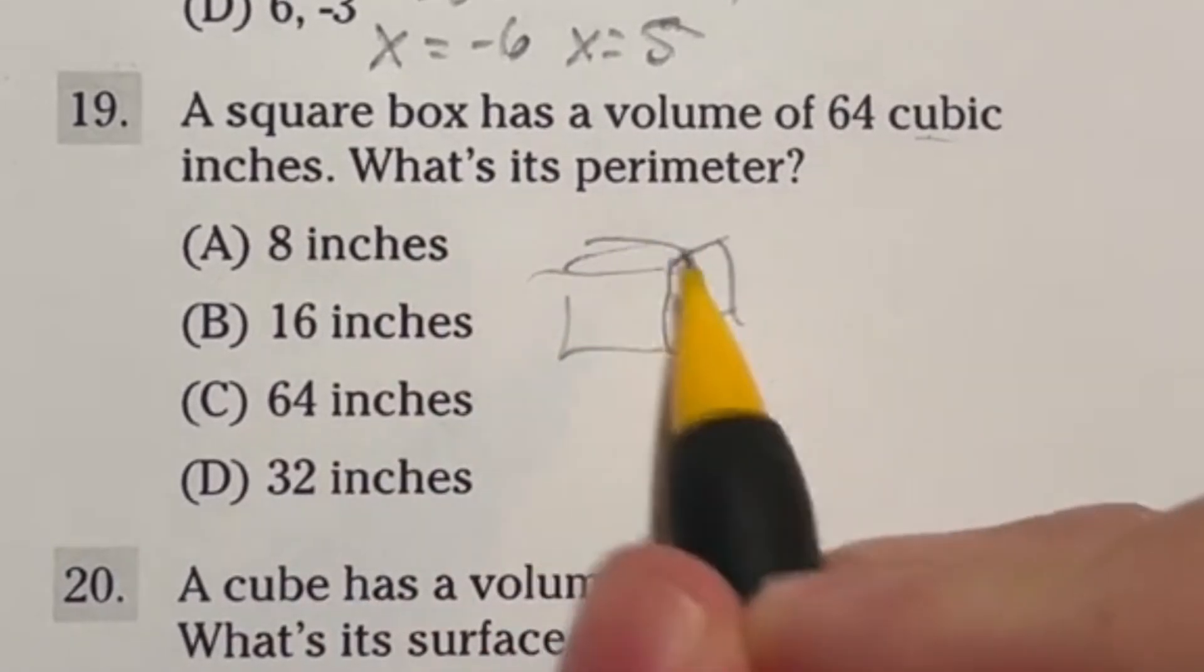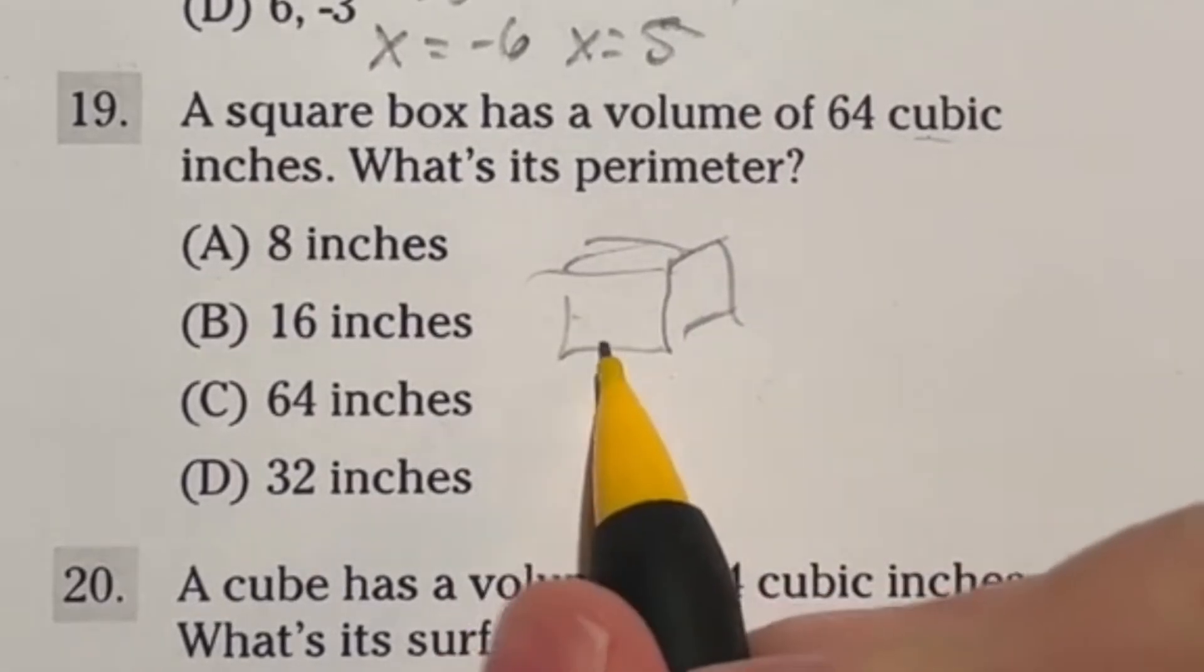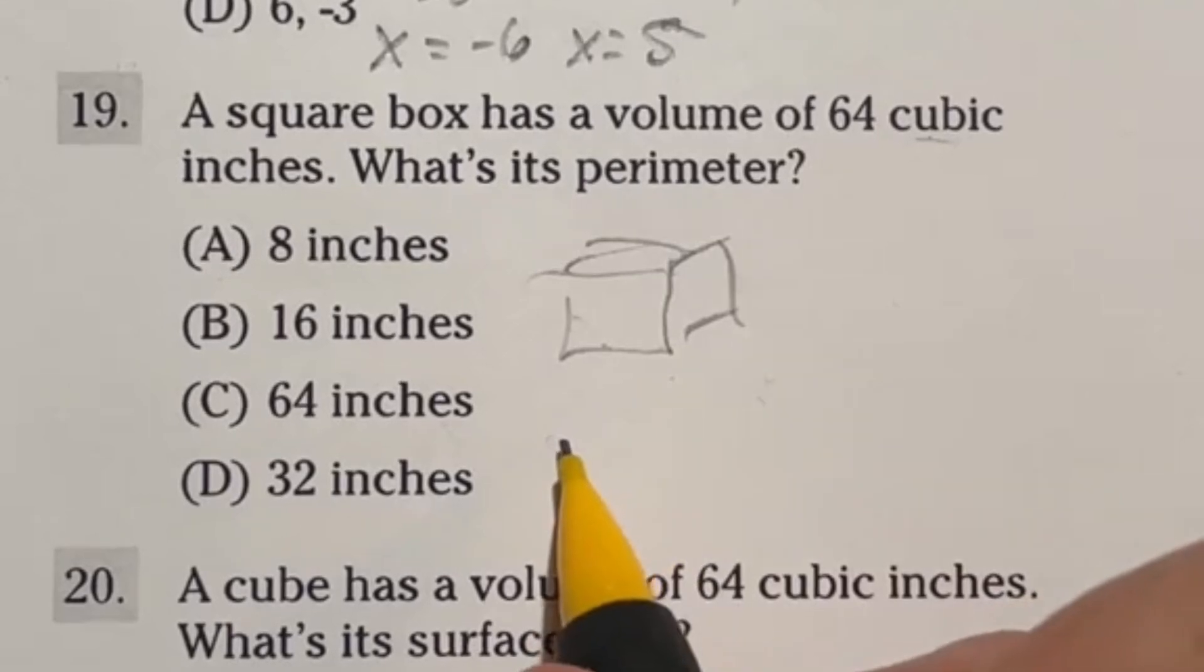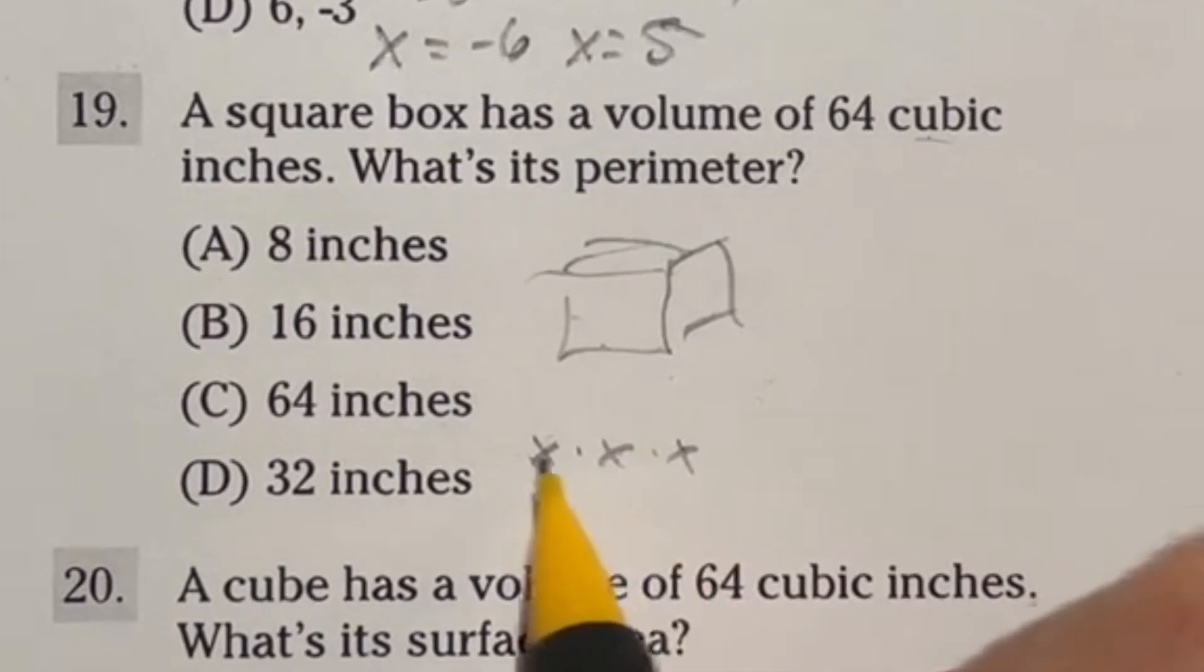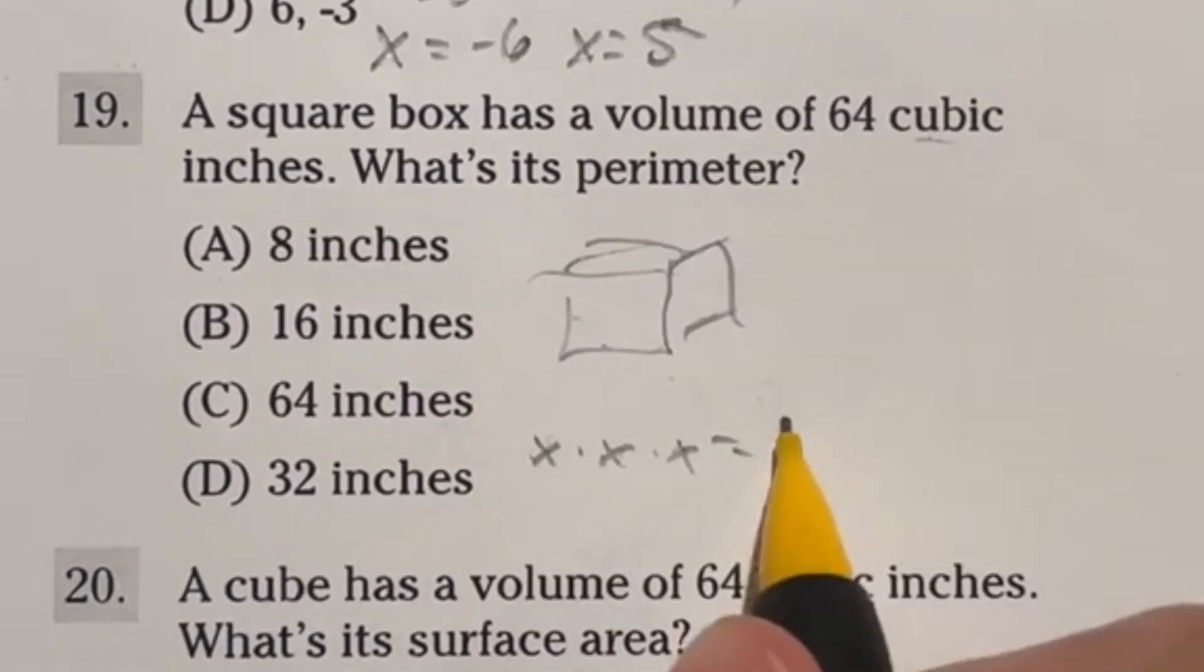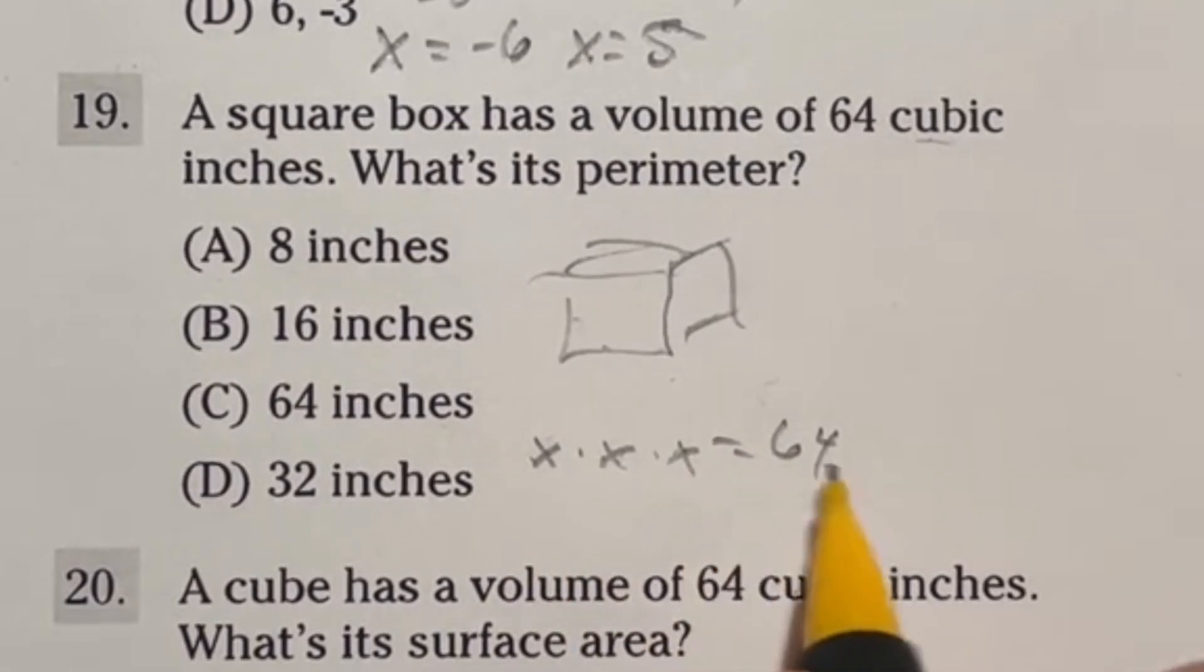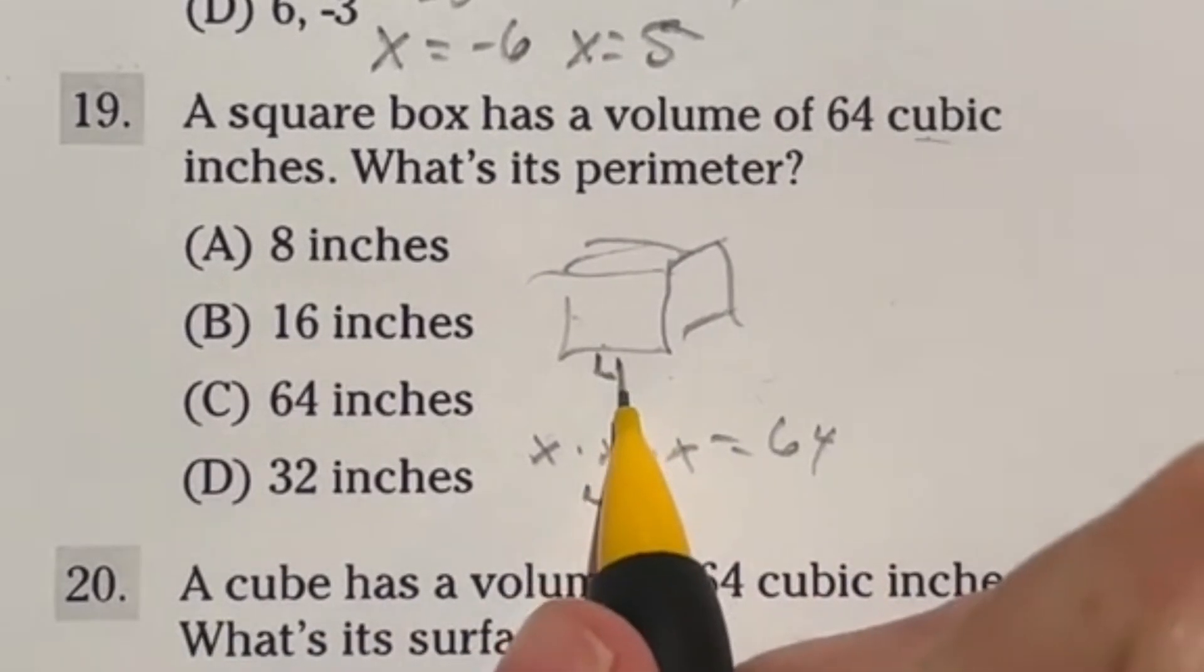And it's got a volume of 64 cubic inches. Now what does that tell me? Well, we know that all of these sides have to be the same. So that means that we're looking at some number that when you do length times width times height, it's going to give you this volume. Well, that number is the same. So really, this is just x times x times x, where that's just the length, the width and the height. So that is going to be equal to 64. Well, that's the same thing as x cubed. So what number times itself gives you 64? Well, that answer is actually four because four times four gives you 16 times another four will give you 64. So that means our side length here is four.